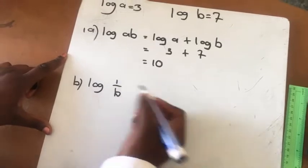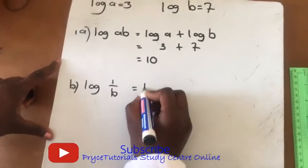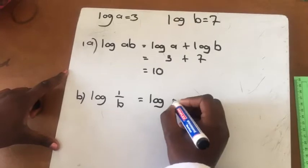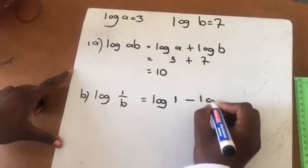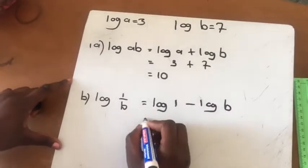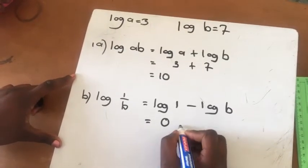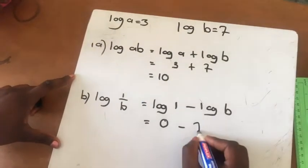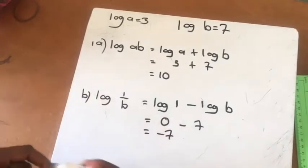Log 1 over b — I'm going to split this as log 1 minus log b. Log 1 is equal to 0, so I'm going to say 0 minus 7, then my answer will be minus 7.